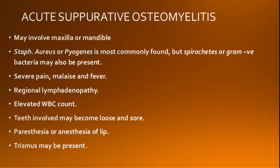The features of acute suppurative osteomyelitis: involvement may be in either jaw, though spread in the mandible is wider. The infection is of mixed nature and the patient presents with constitutional symptoms like high intermittent fever, malaise, nausea, vomiting, and anorexia. There is regional lymphadenopathy and elevated WBC count suggestive of acute infection. Teeth are tender to percussion and loose. A rise in pressure in the inferior alveolar canal can cause paresthesia or anesthesia of the lip. Trismus may also be present.